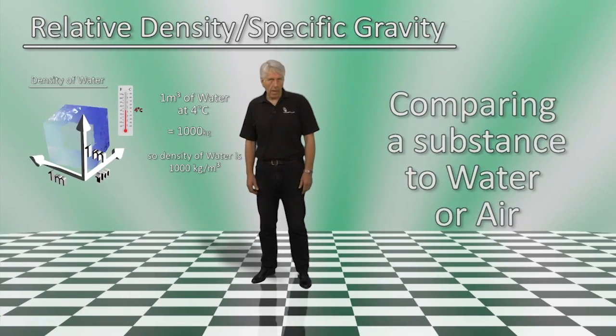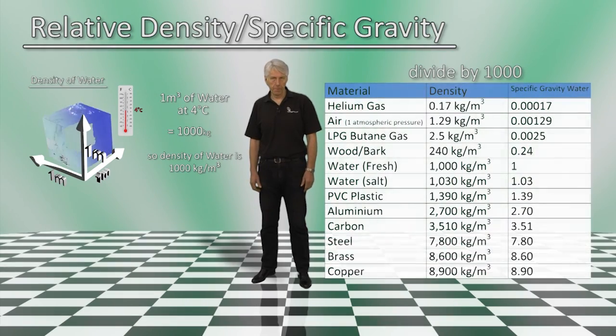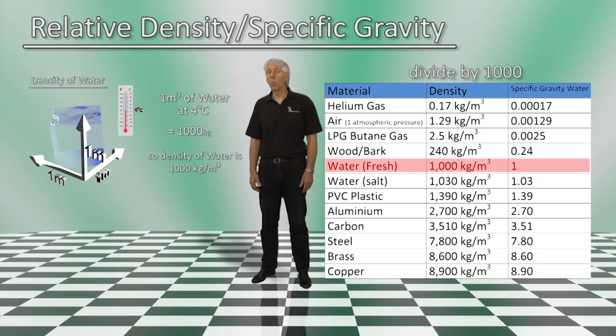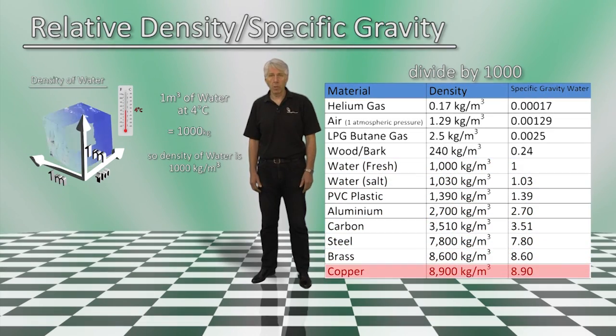When comparing to water, everything's density needs to be divided by the density of water. So water has a specific gravity of 1 on this comparison table. Copper, which has a density of 8,900 kg per cubic meter, would have a specific gravity of 8.9.